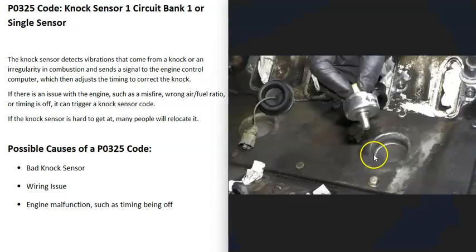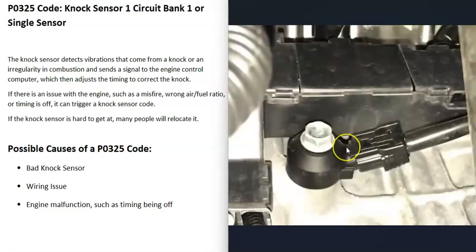Engines have a knock sensor that detects vibrations, knocking, or pinging inside the engine. The knock sensor reports this to the computer, which adjusts timing until the knocking stops. When you get a P0325 code, the computer detects a problem with the knock sensor that needs to be troubleshot.